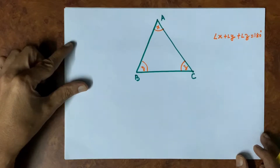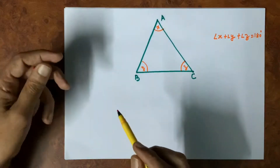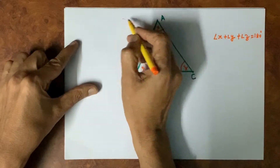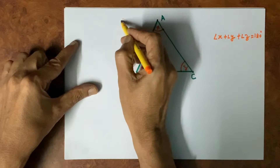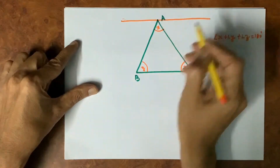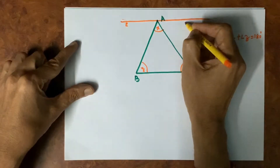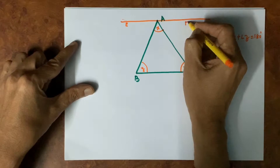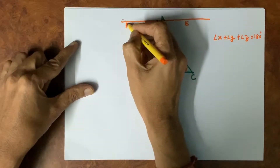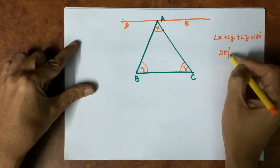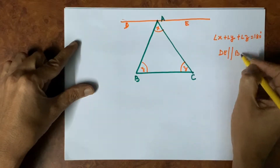To prove this, we do some construction. We draw a line parallel to BC from the point A. This line is parallel to BC — let us name it DE. By construction, DE is parallel to BC.